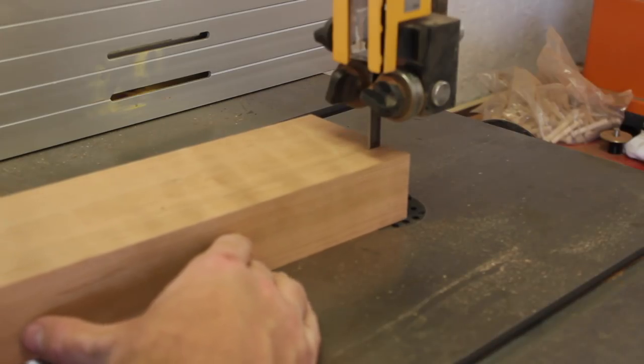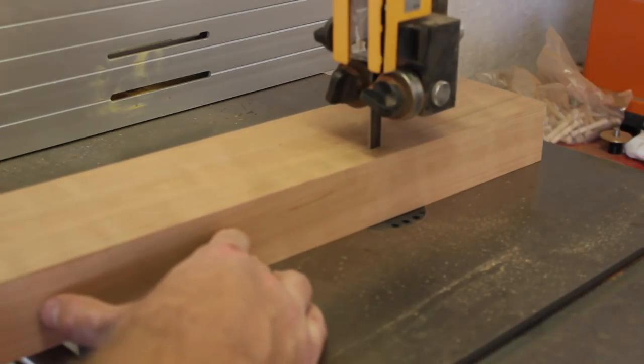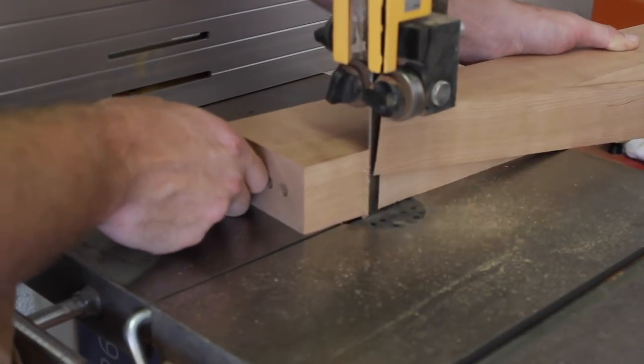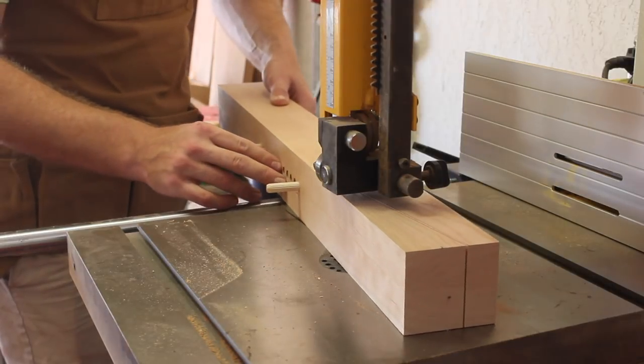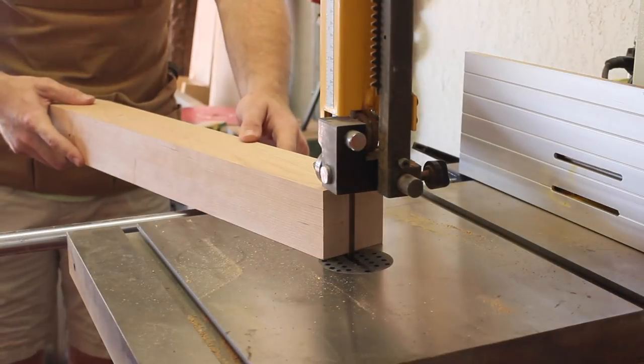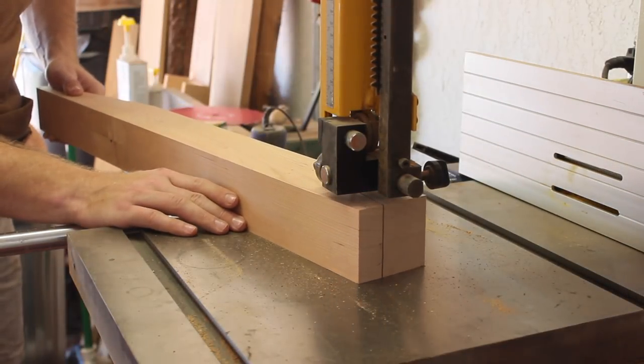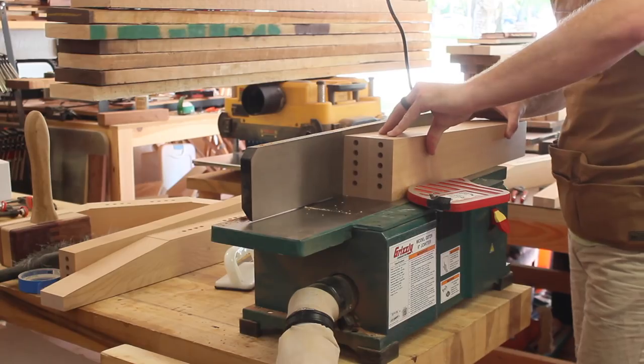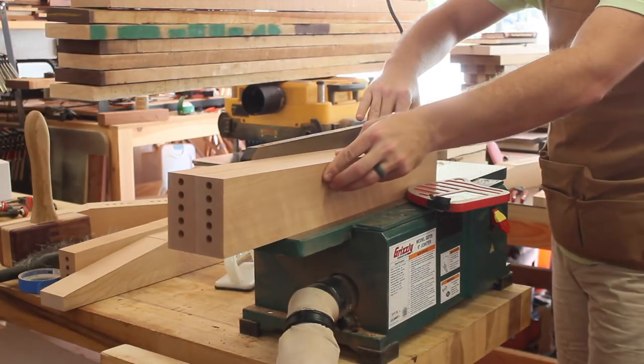I'm getting all the tapers cut at the bandsaw, and then I'll clean them up at the jointer. The vertical pieces have a taper of 4 inches wide at the bottom to 3 inches wide at the top, whereas the horizontal pieces go from 1 inch high at the outside point to the full height of 3 inches in the middle. I used double sided tape to pair these pieces up to make sure that they would remain relatively identical.